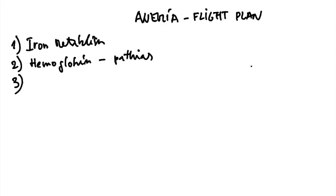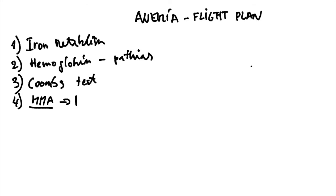The third one is aiming at the Coombs test — just a few words to remind you what a Coombs test is and what we use it for. The fourth one is on MMA — methylmalonic acid — very important in B12 deficiencies. This video should really force it into your brain that you can always use MMA to check out or confirm a B12 deficiency diagnosis.